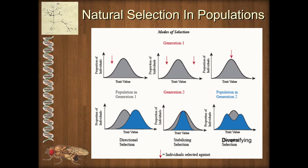When we're looking at populations, one of the most common types of traits that we see are continuous traits. These are things like size in most populations. In humans, for instance, there's a very small percentage of people who are very short, a very small percentage who are very tall, and most people fall somewhere in the middle. So we get this normal distribution of phenotypes, with no discrete classes — everything from both extremes in between.